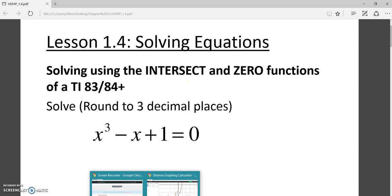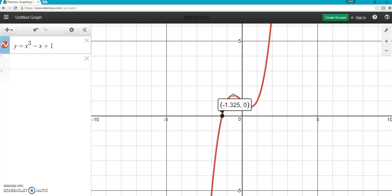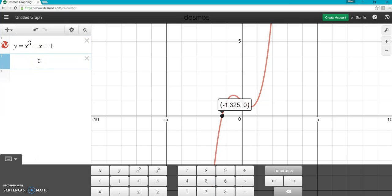The way we're going to do that is just like you did back when you used to solve systems by graphing. You graphed both equations, find where they intersect. Same idea. We have one equation graphed. Now we need to graph the other equation, which is just the other side of the equal sign. So y = 0.